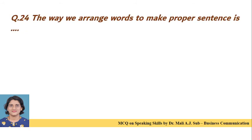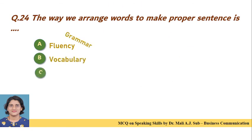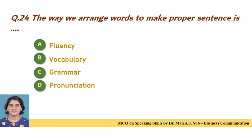Question 24: The way we arrange words to make a proper sentence is — Option A: fluency. Option B: vocabulary. Option C: grammar. Option D: pronunciation. Correct answer is Option C — the way we arrange words to make a proper sentence is grammar.